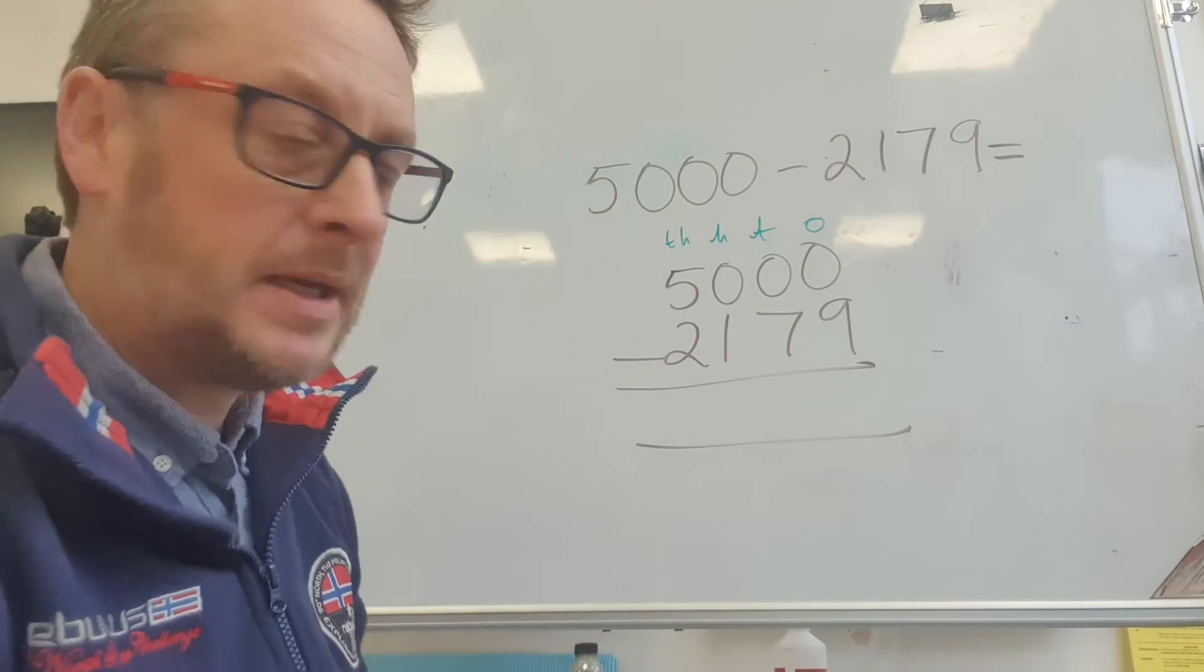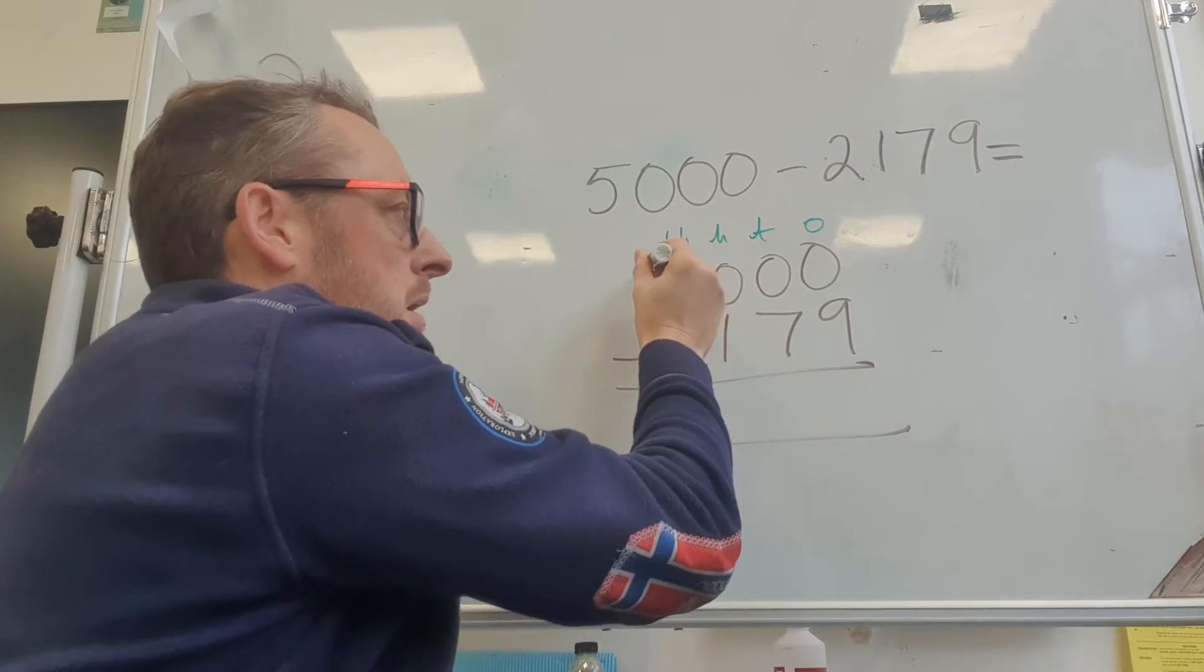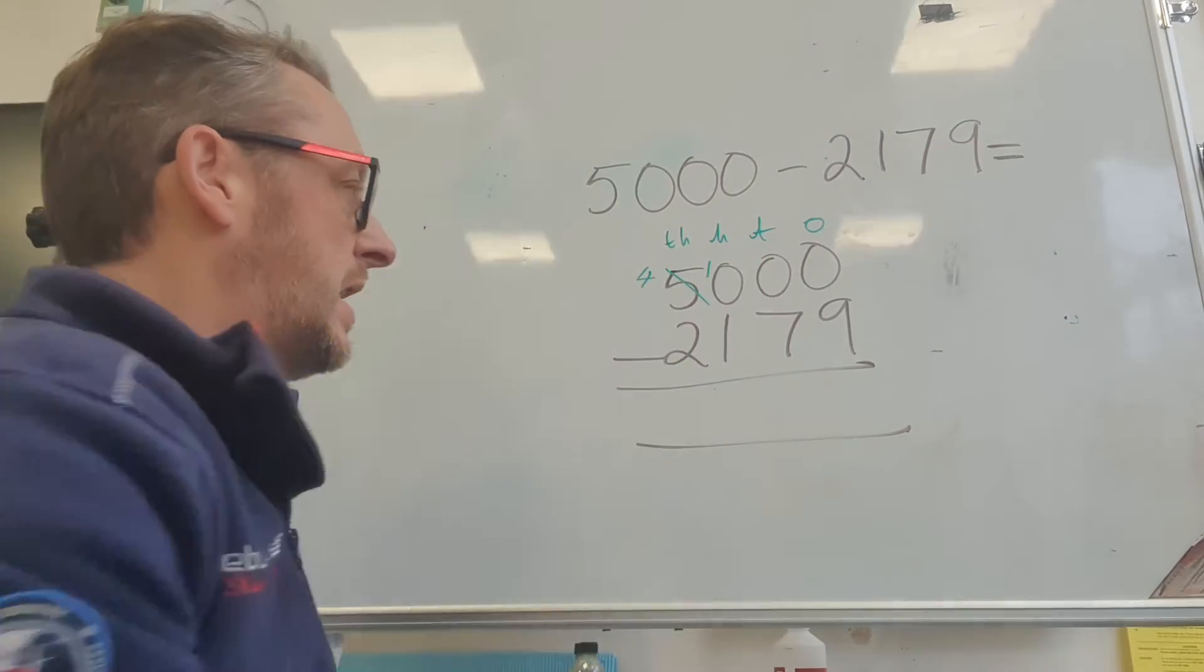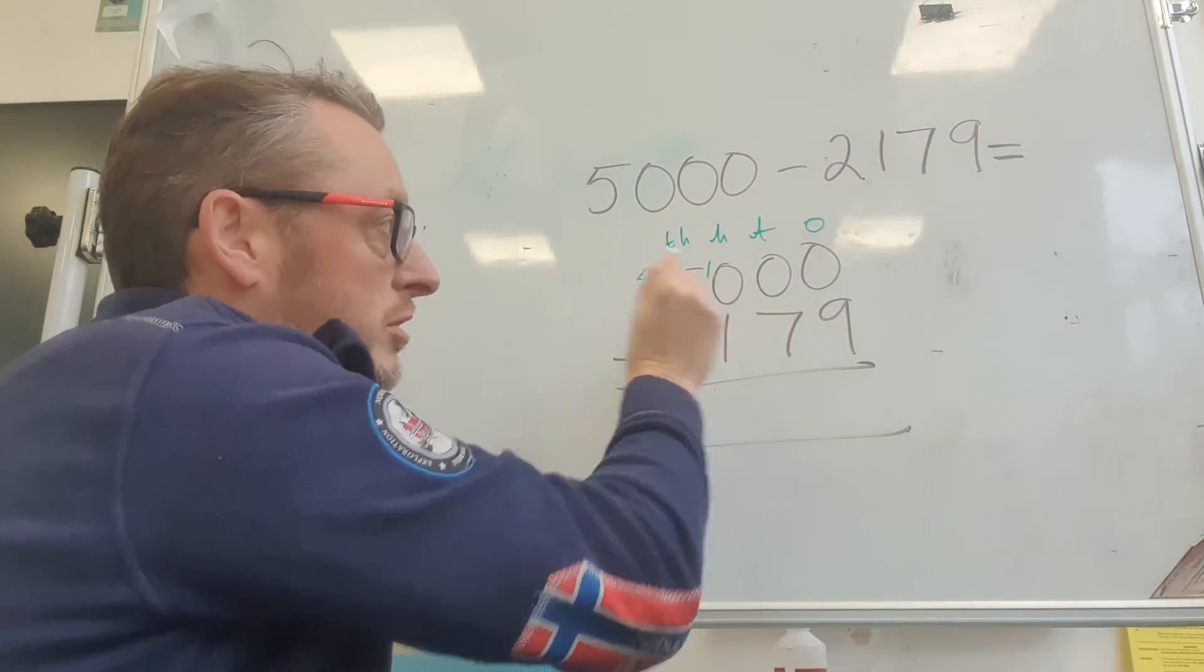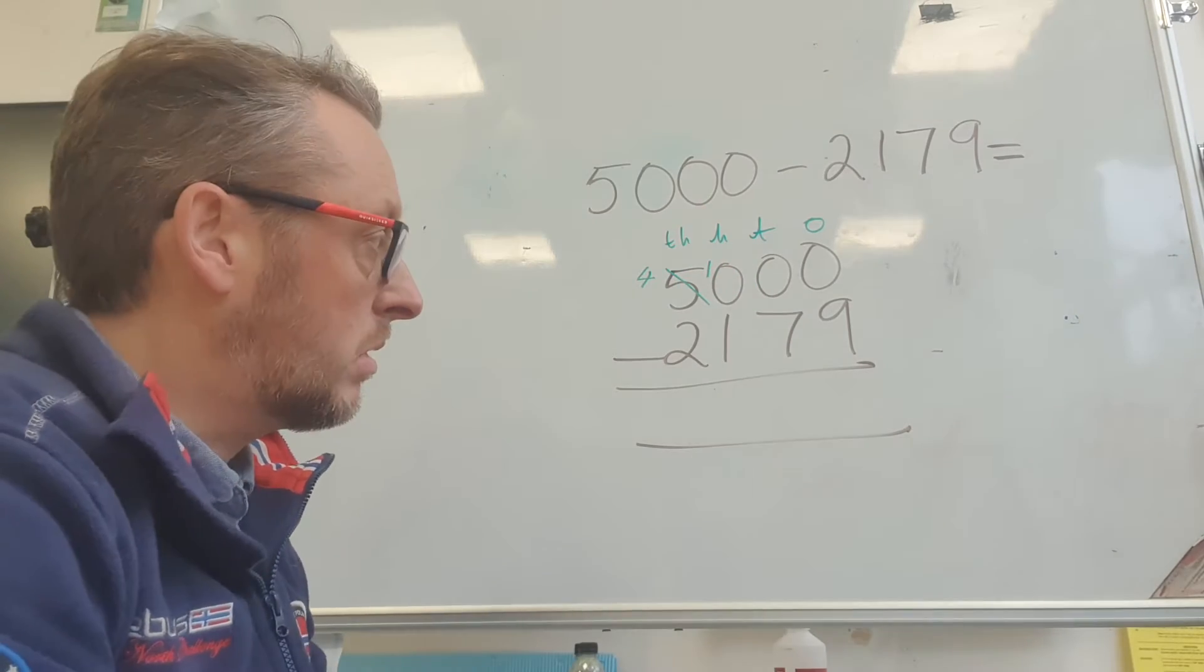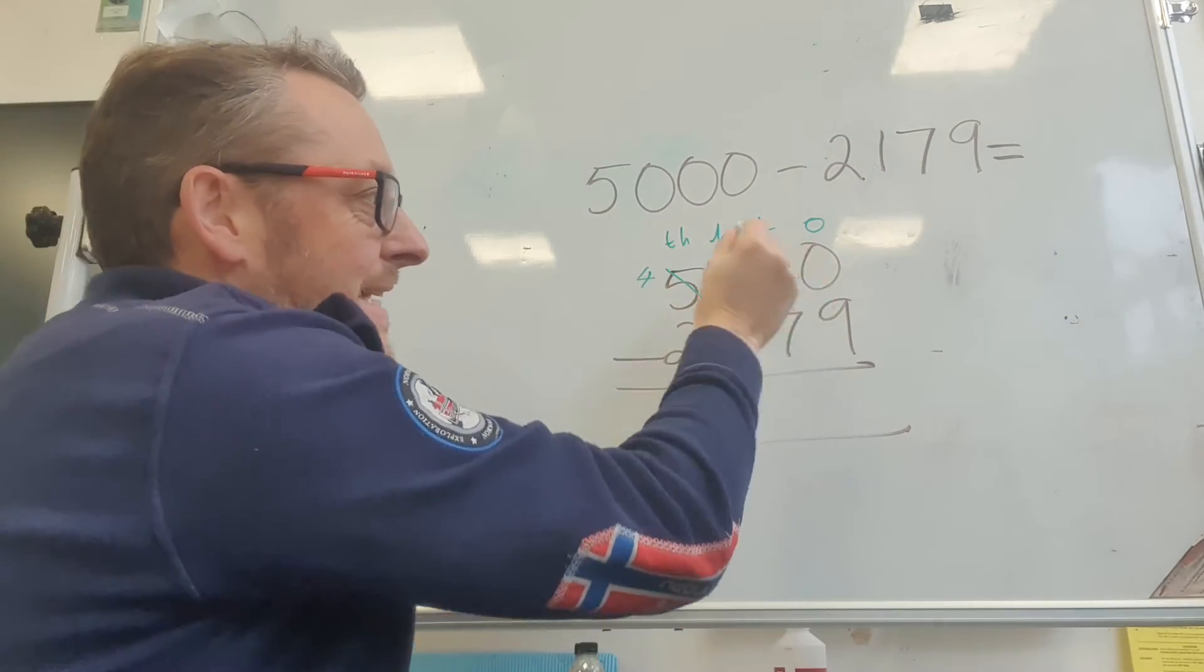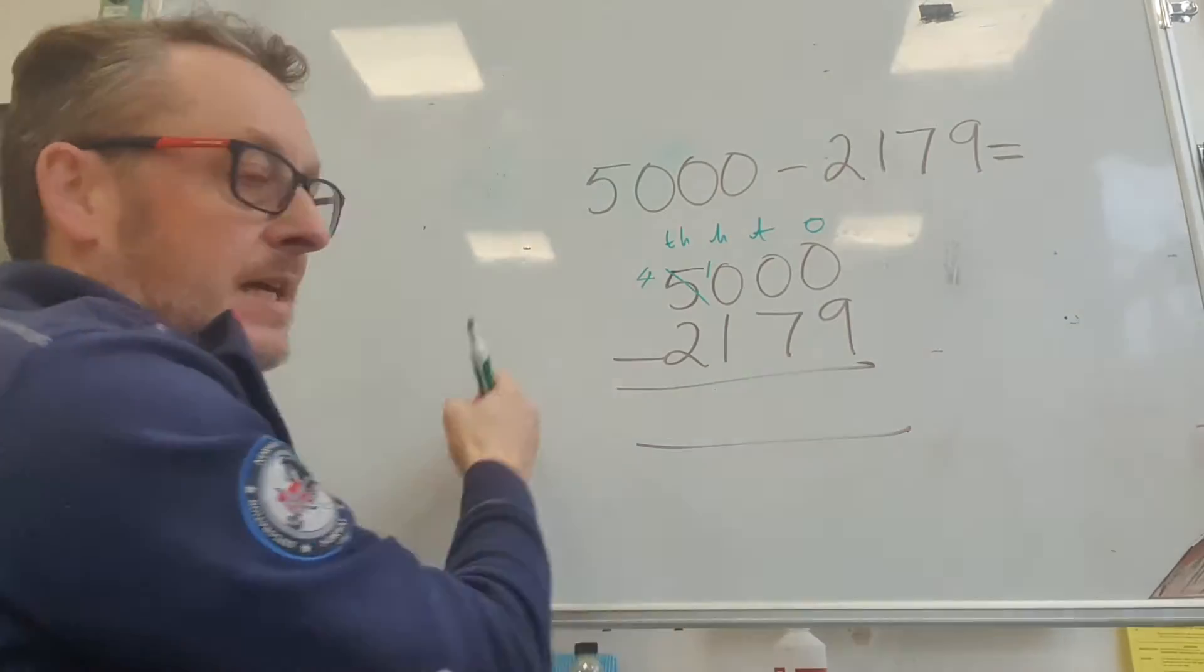This can get a bit complicated. I've got 5,000 there and I need to take a thousand off to put it into my hundreds section. So now I've got ten hundreds there, which is a thousand. But I need to get over here. I need to do this first calculation; we work from right to left.